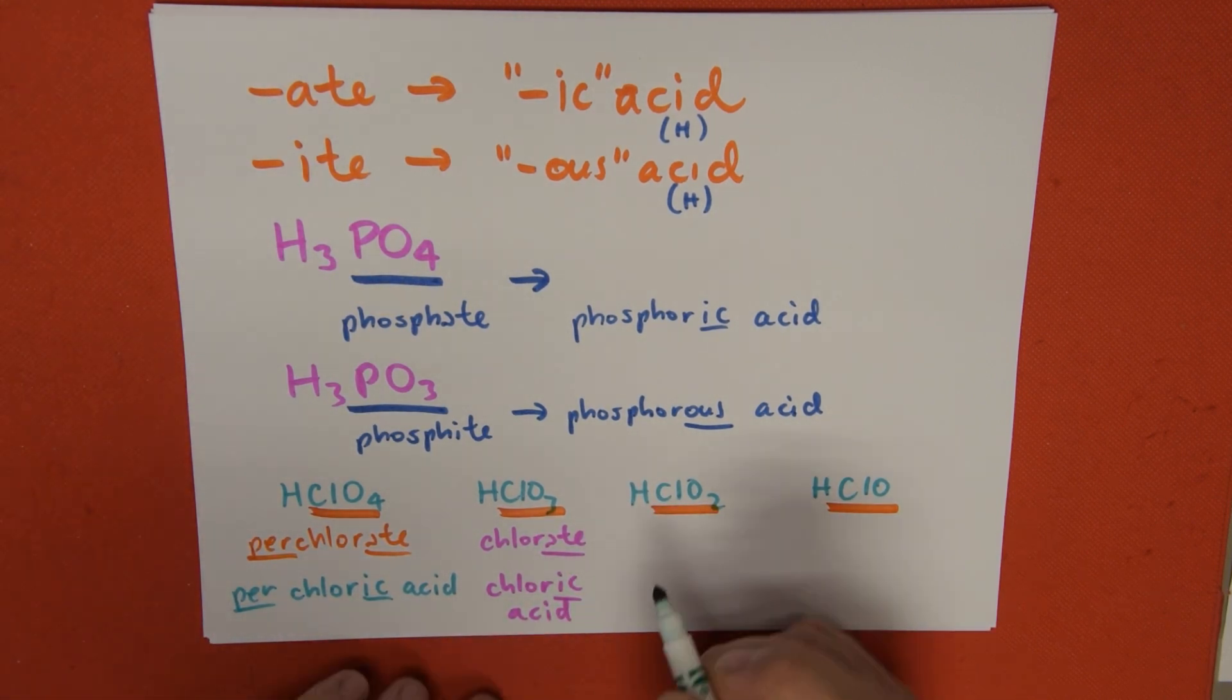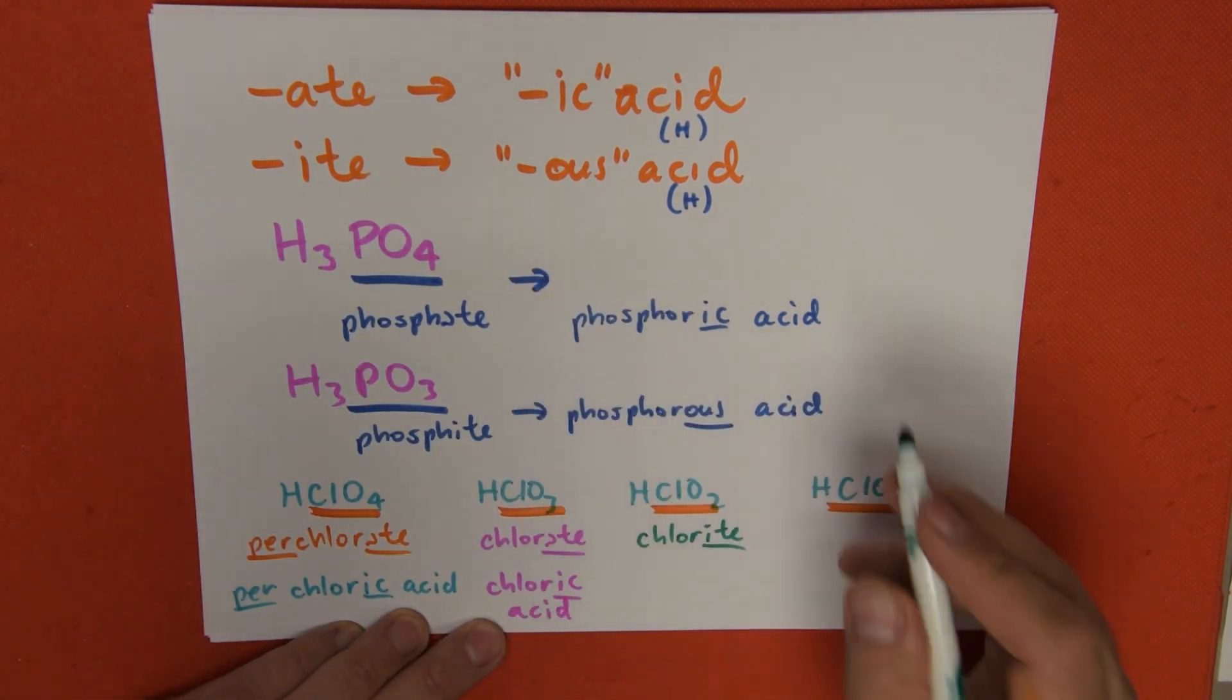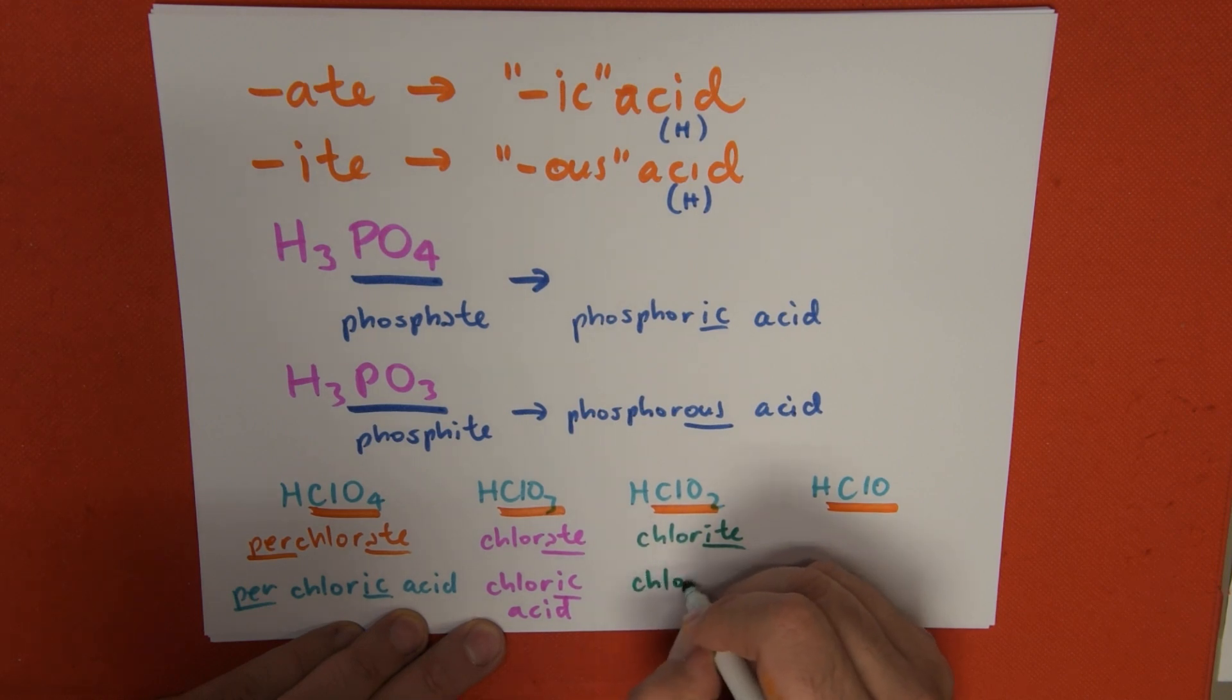Then for the next one, the name of the anion is chlorite. With this -ite ending, we change it to -ous, and this is going to be chlorous acid.